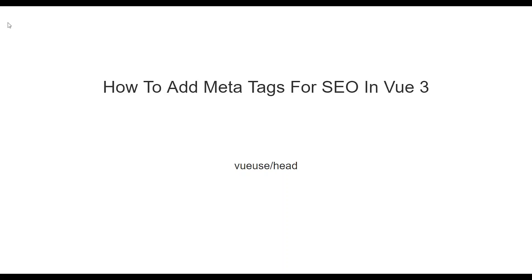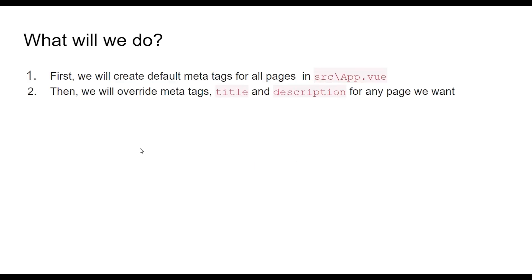Hello everyone, my name is Ahmad Jaltoud. This video is about how to add meta tags for SEO in Vue 3. We will use the @vueuse/head package. First, we will create default meta tags for all pages in app.vue, then we will override the meta tags title and description for any page we want.